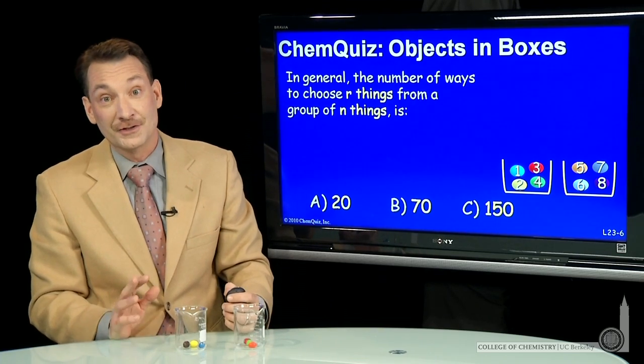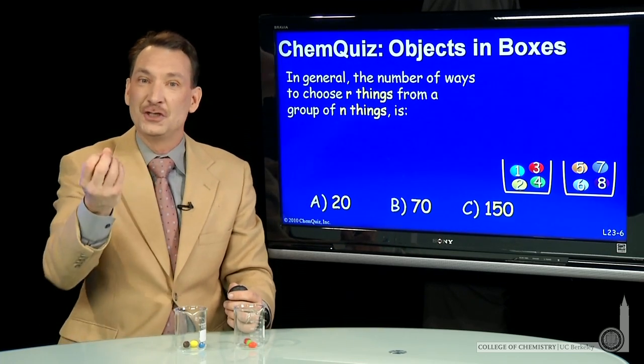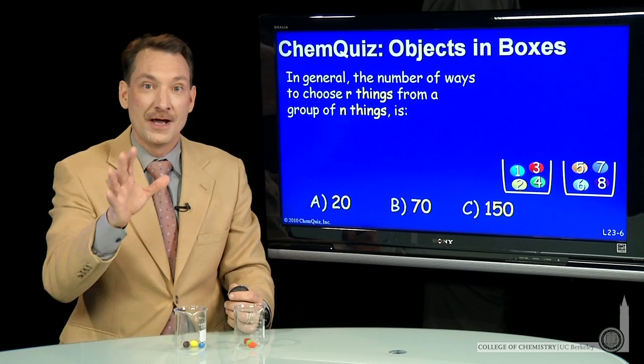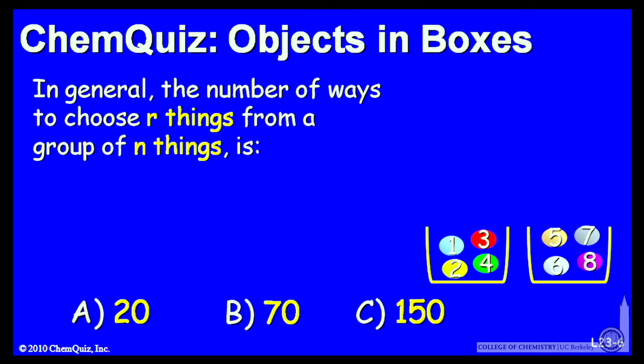Well, you can do that mathematically, it turns out. This is an eight choose four from your algebra. The number of ways to choose r things from a group of n things is given by a relatively simple formula in r and n.